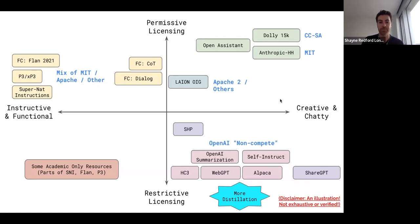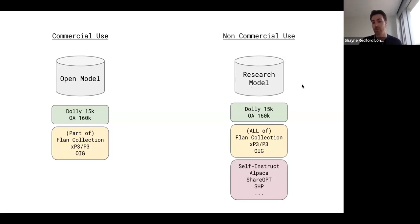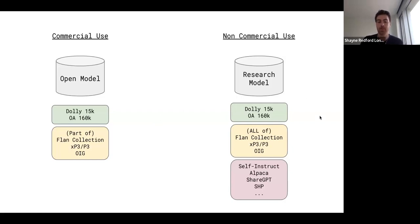What does this mean? In the short term, the types of models that can be developed depend on your intended usage. Anyone can right now train a model using these open-source datasets and parts of the FLAN collection to create a model usable for commercial or any other purpose. For non-commercial research models, all those same datasets are available plus more, including many of the distillation tasks, which are currently more creative in nature. For the community to catch up to OpenAI, Google, and other proprietary models, there will need to be more development of creative datasets with more open and less restrictive licensing.